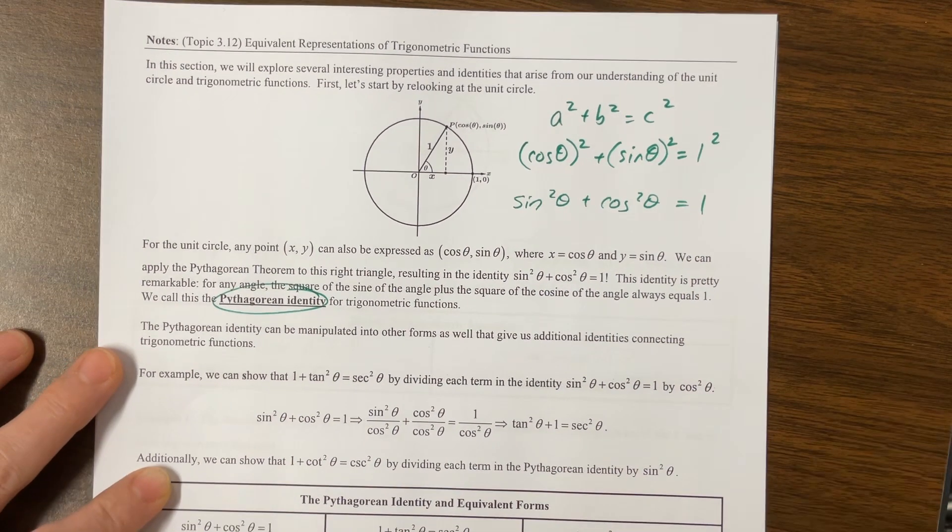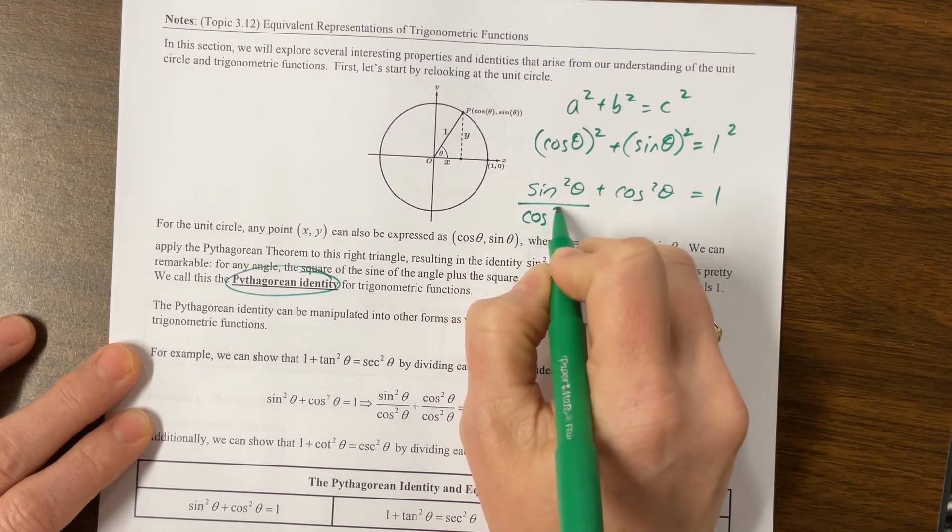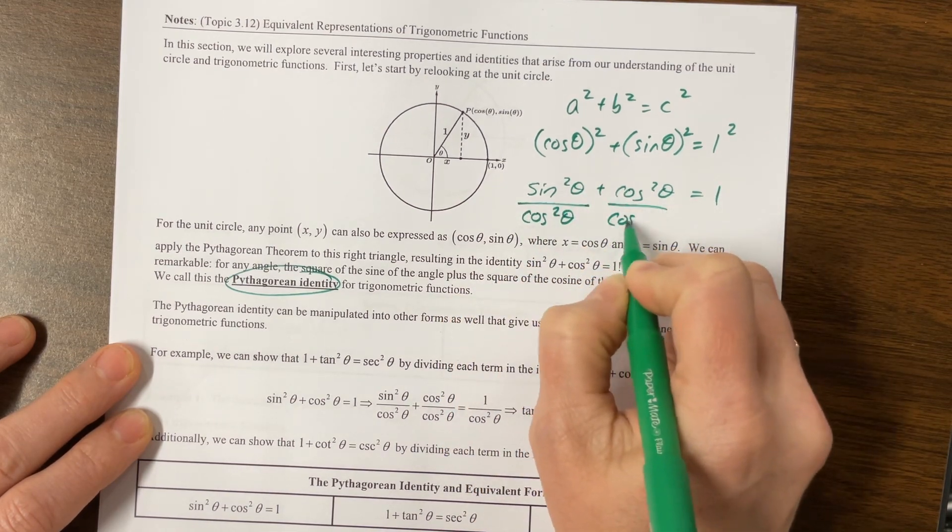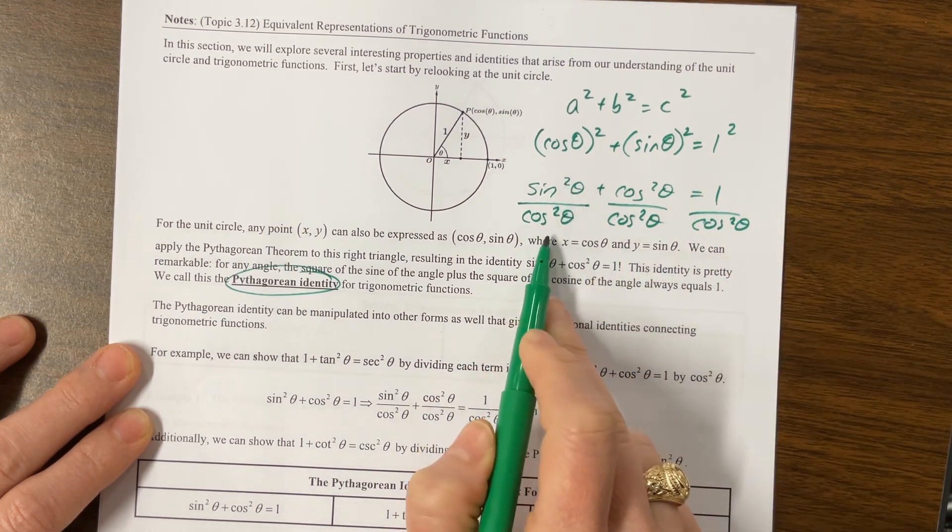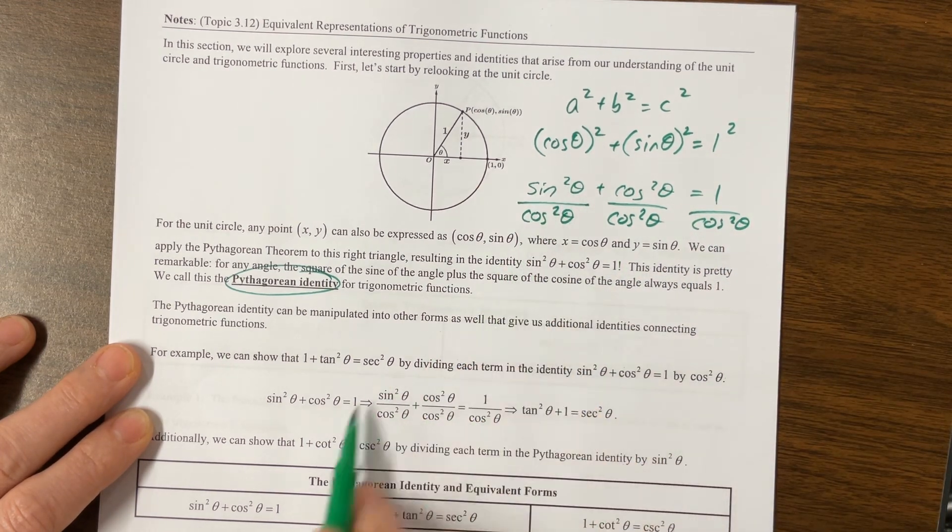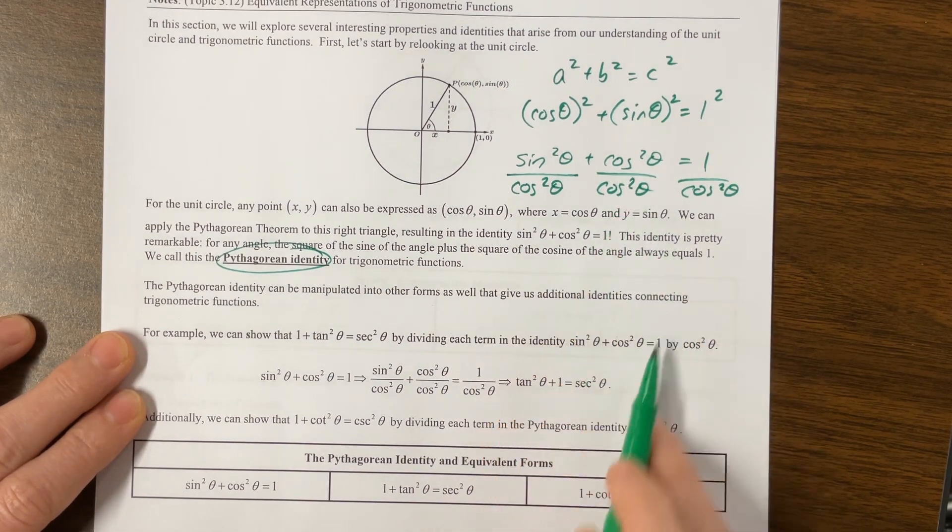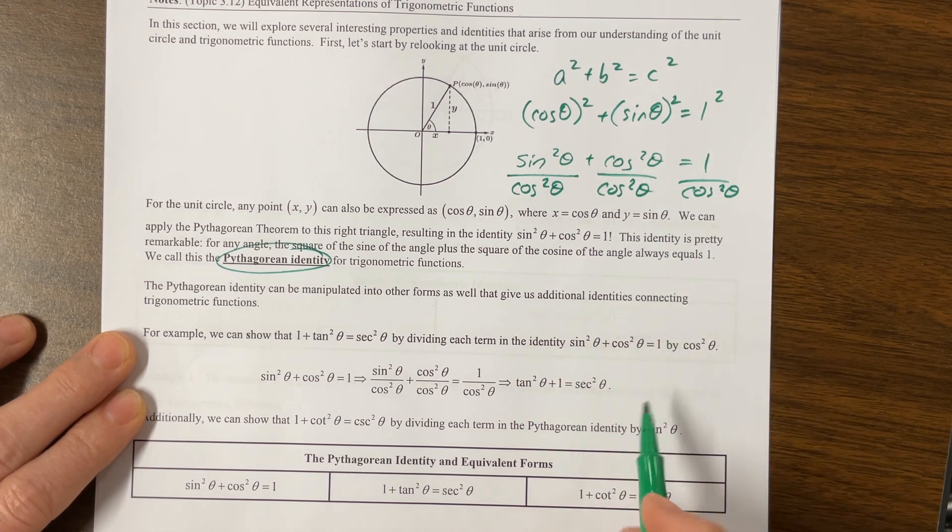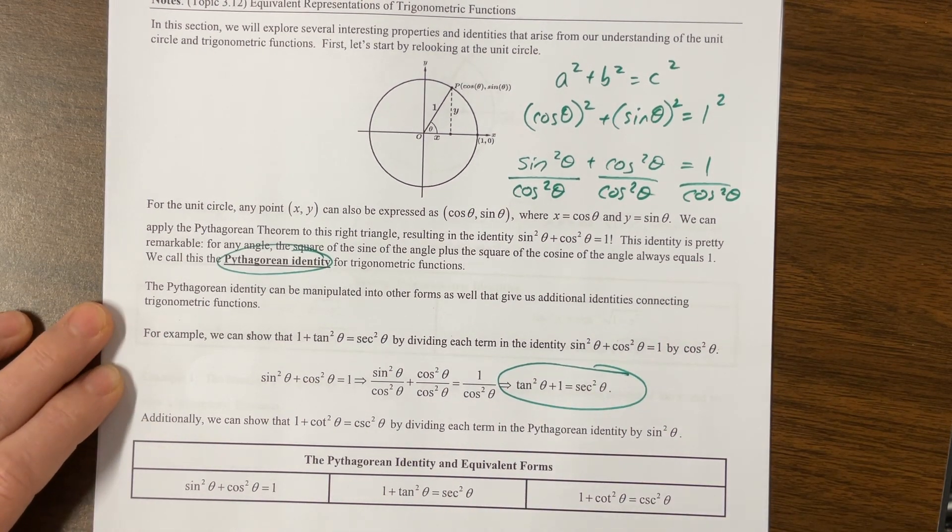Well, one thing that we can do with that identity is that we can divide through, let's divide through everybody by cosine squared. And then this gives me sine over cosine is tangent. So sine squared over cosine squared is tangent squared. And then cosine squared over cosine squared is 1. And 1 over cosine squared is secant squared. And so this is another version of the Pythagorean identity.